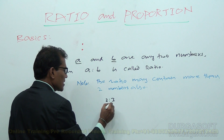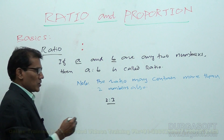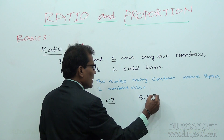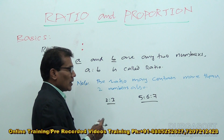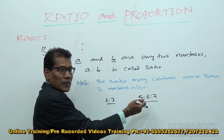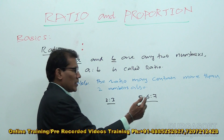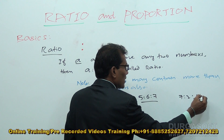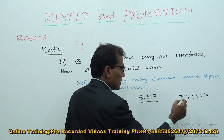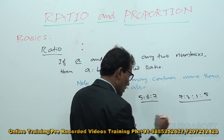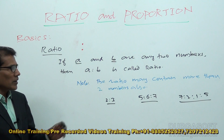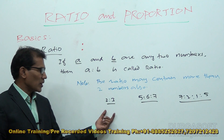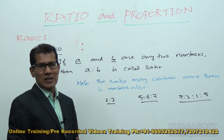For example, two is to three — this is a two-number ratio. Five is to six is to seven — there are three numbers in the ratio. Seven is to two is to one is to five — these are all ratios. So ratio doesn't always mean only two numbers; the ratio may contain two or more numbers.